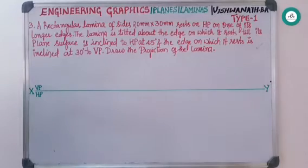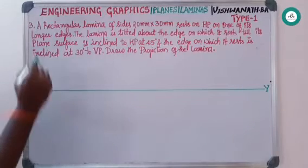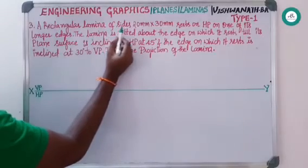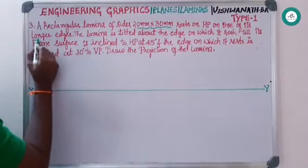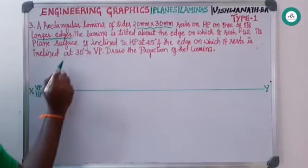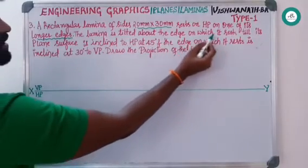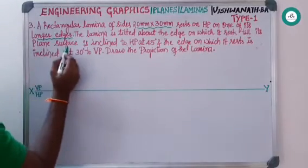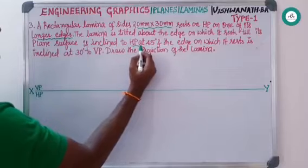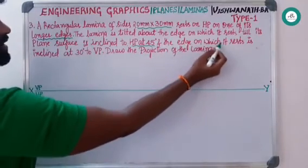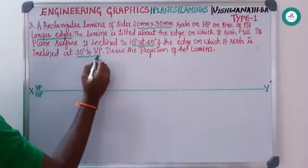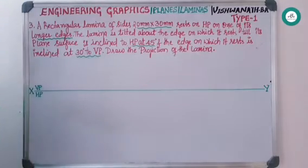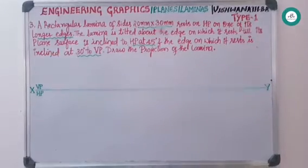Coming to the next question in type one, the question looks bit lengthy because it is presented in a different way. A rectangular lamina of size 20 mm into 30 mm rests on HP on one of its longer edges — this is the first condition. The lamina is tilted about the edge on which it rests till its plane surface is inclined to HP at 45 degrees — this is the second condition. The edge on which it rests is inclined at 30 degrees to VP — this is the third condition. Draw the projection of the lamina.